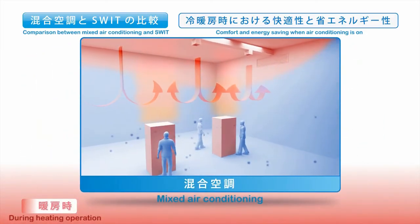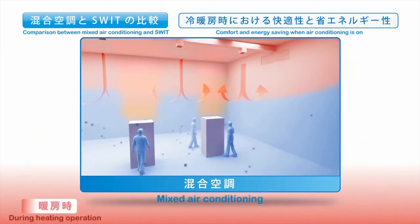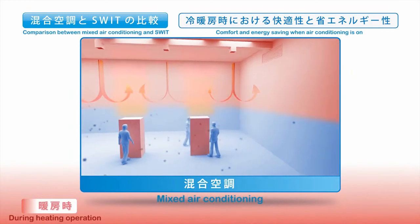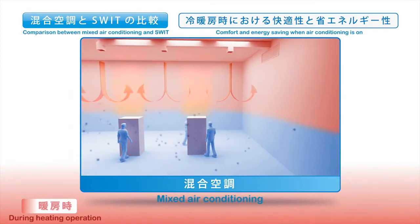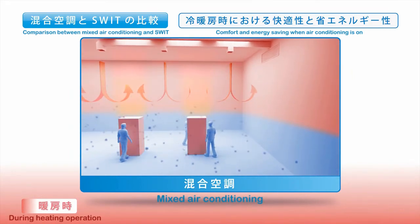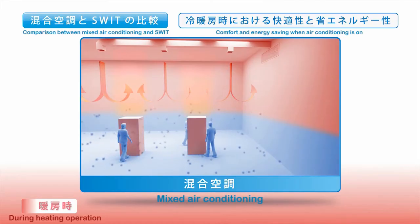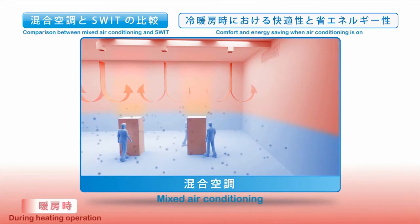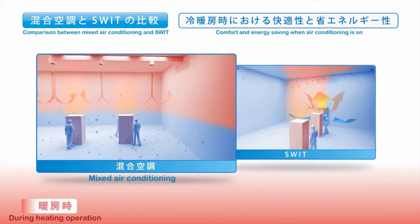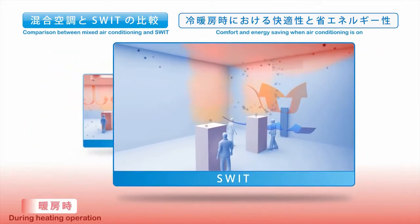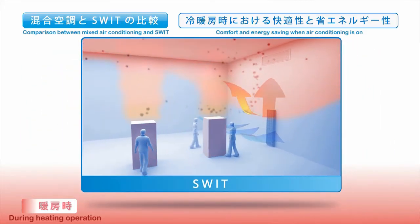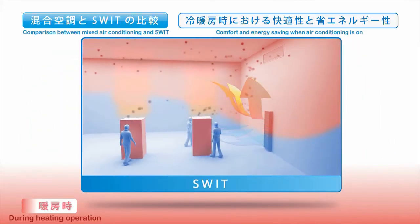During heating, cold air and pollutants stay in the living area with Mixed Air Conditioning, as it is difficult for the warm air supplied to reach the lower levels. Meanwhile, SWIT prevents cool air and pollutants from remaining by carrying them with the surrounding air up to the higher levels.